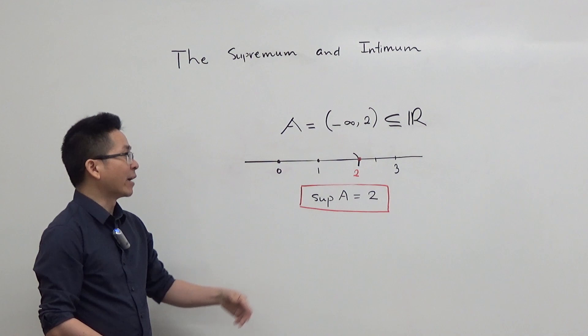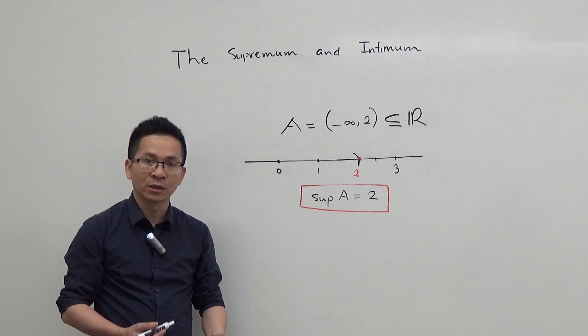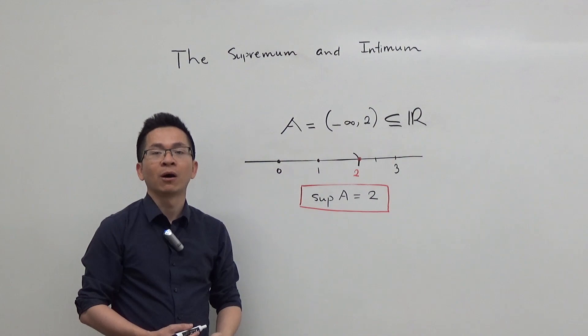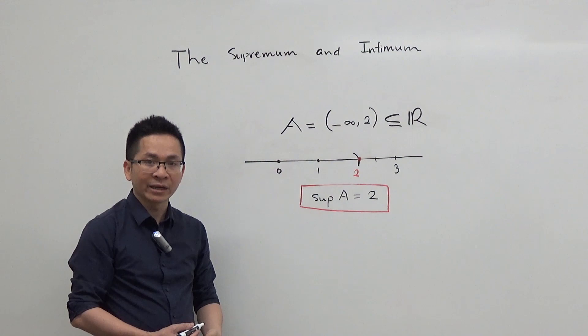In fact, any real number x that is greater than or equal to 2 is also an upper bound of this set. However, we are interested in the smallest upper bound of the set. And in this case, 2 is in fact the smallest upper bound of the set.